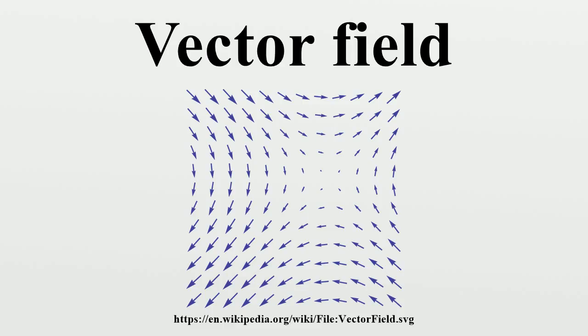This representation of a vector field depends on the coordinate system, and there is a well-defined transformation law in passing from one coordinate system to the other.